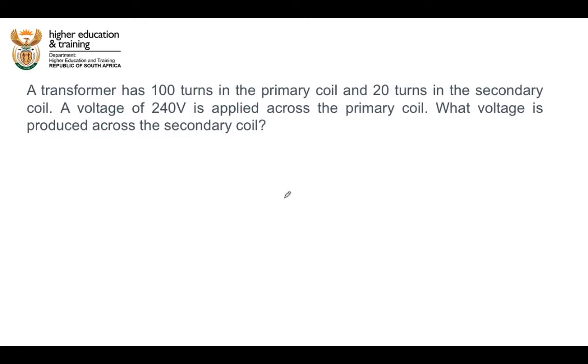Let's take a look at this question together. It says a transformer has 100 turns in the primary coil and 20 turns in the secondary coil. They tell us that a voltage of 240 volts is applied across the primary coil. They are asking what voltage is produced across the secondary coil.